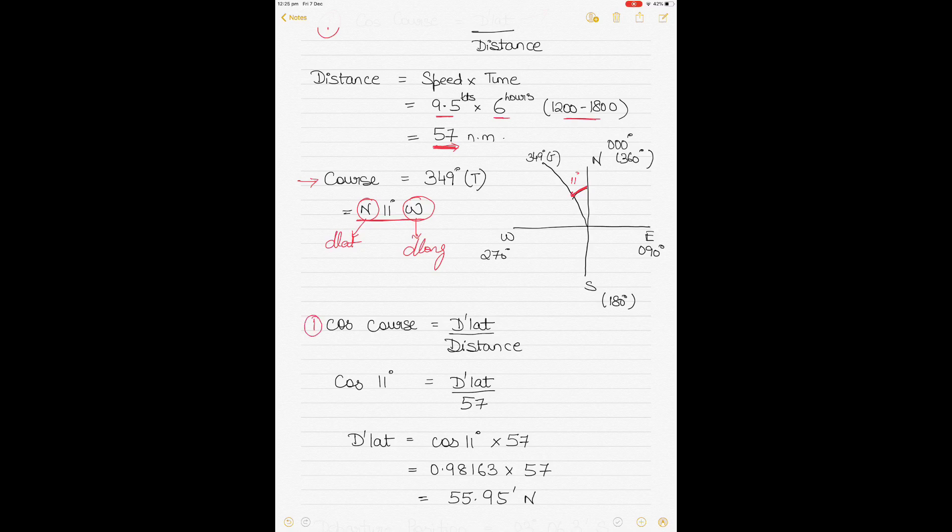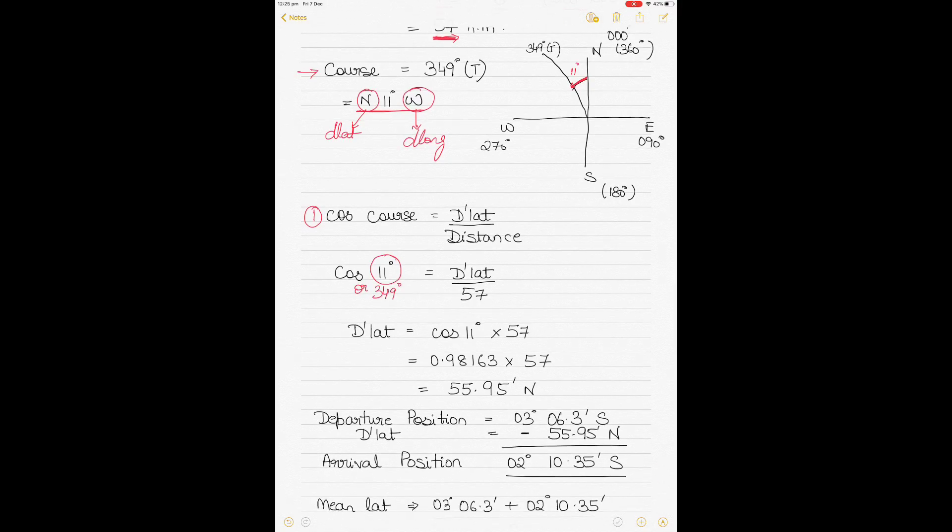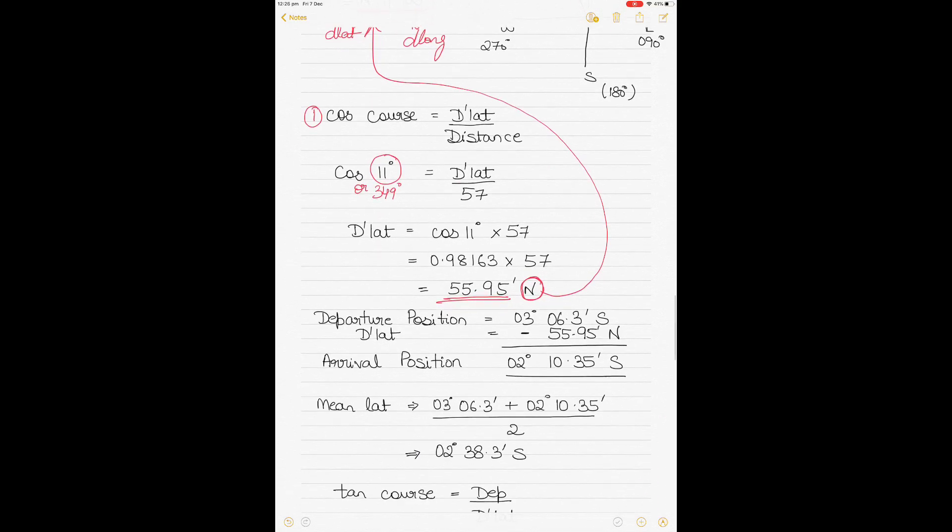Once we have our course and distance, let's go back to the first formula which said cos(course) equals d lat by distance. Put in the values—you can use 11 here or you can use 349, it doesn't matter, you'll get the same answer. You get the d lat value once you put in the values, and the answer you should be getting is 55.95. You can make it 56 if you want because it's very close to the next number, however I have kept it 55.95. We name it north because we are on a north westerly course.